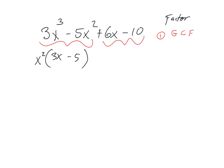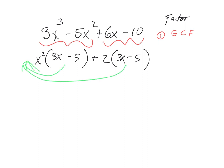Do the second pair of terms have a common factor? Sure — 6 and 10 are both divisible by 2. 6 over 2 is 3x, negative 10 over 2 is negative 5. Can I do more factoring? Absolutely — they both have this exact same parenthesis set (3x minus 5), which means I'm going to factor that out and pull it in front of both of them: (3x minus 5) times (x squared plus 2).